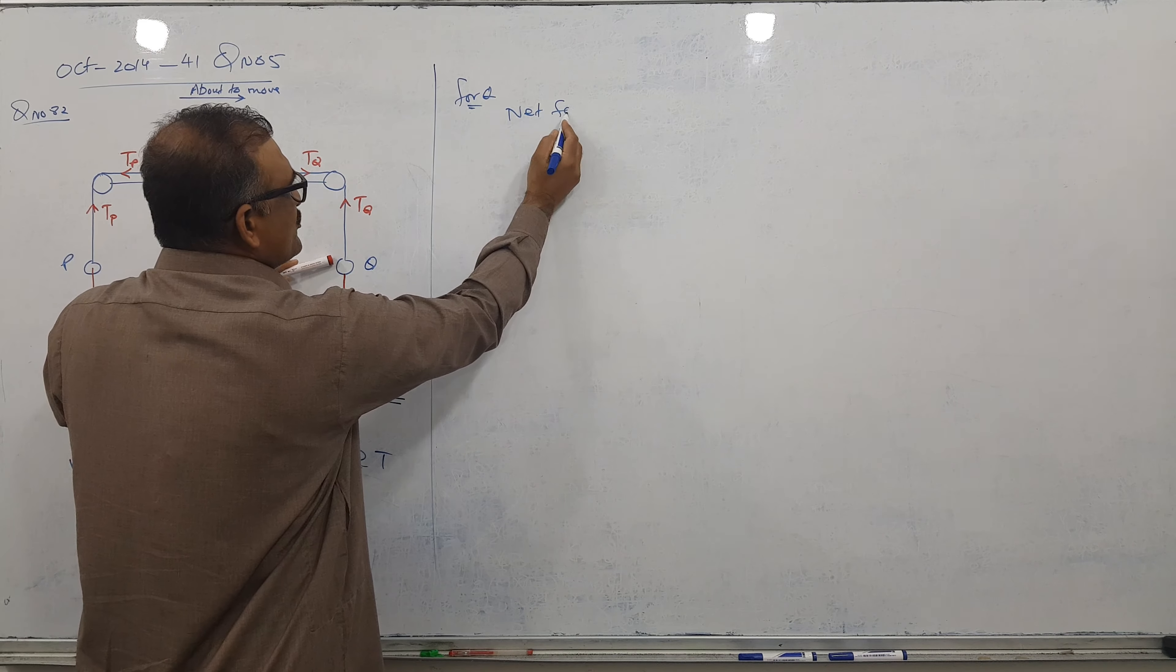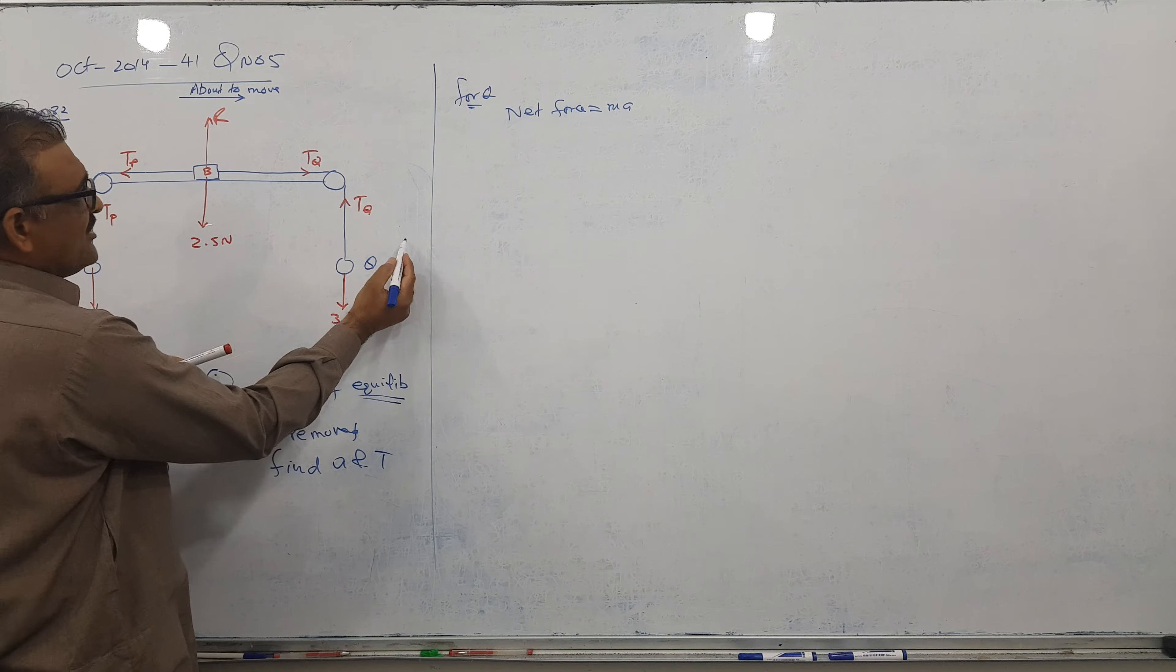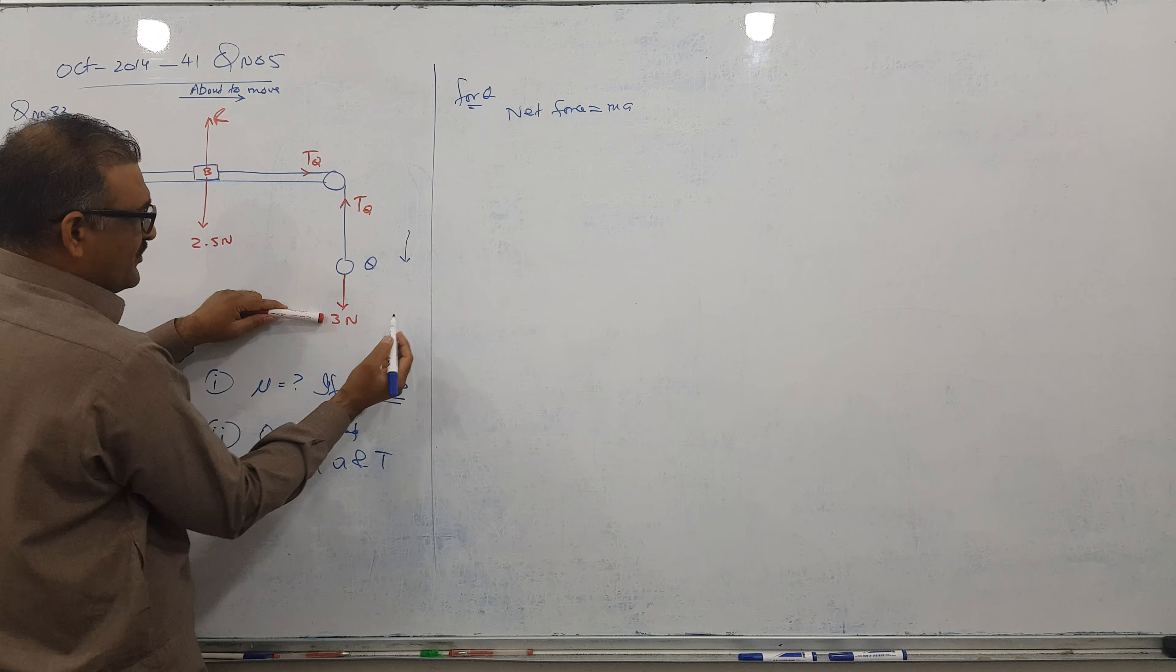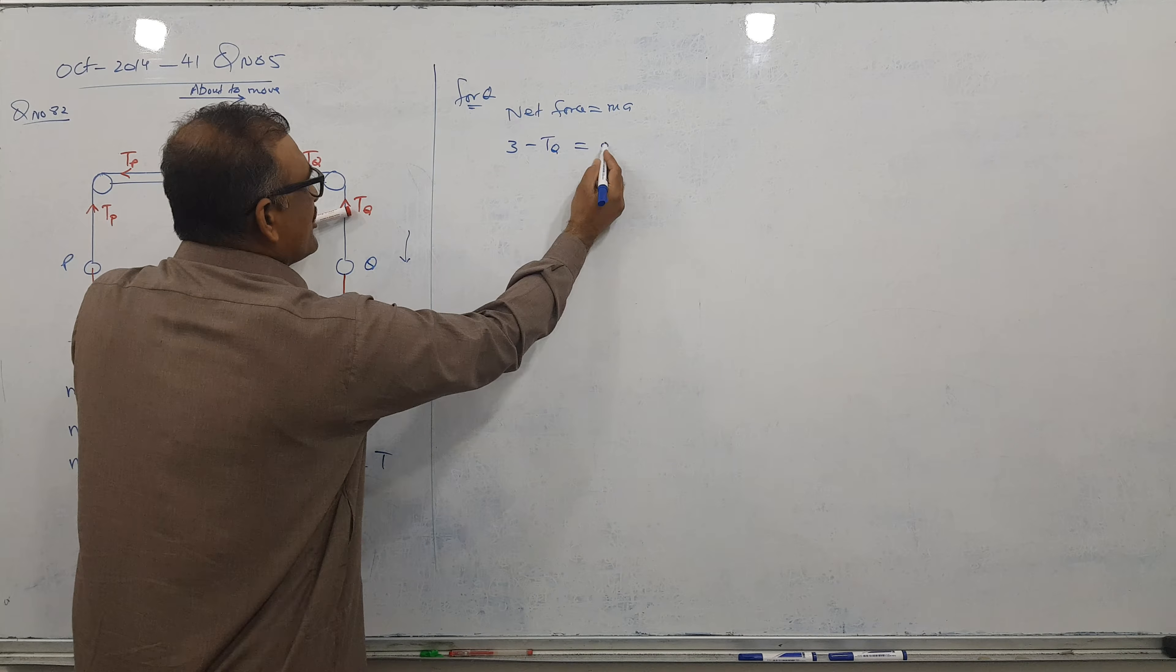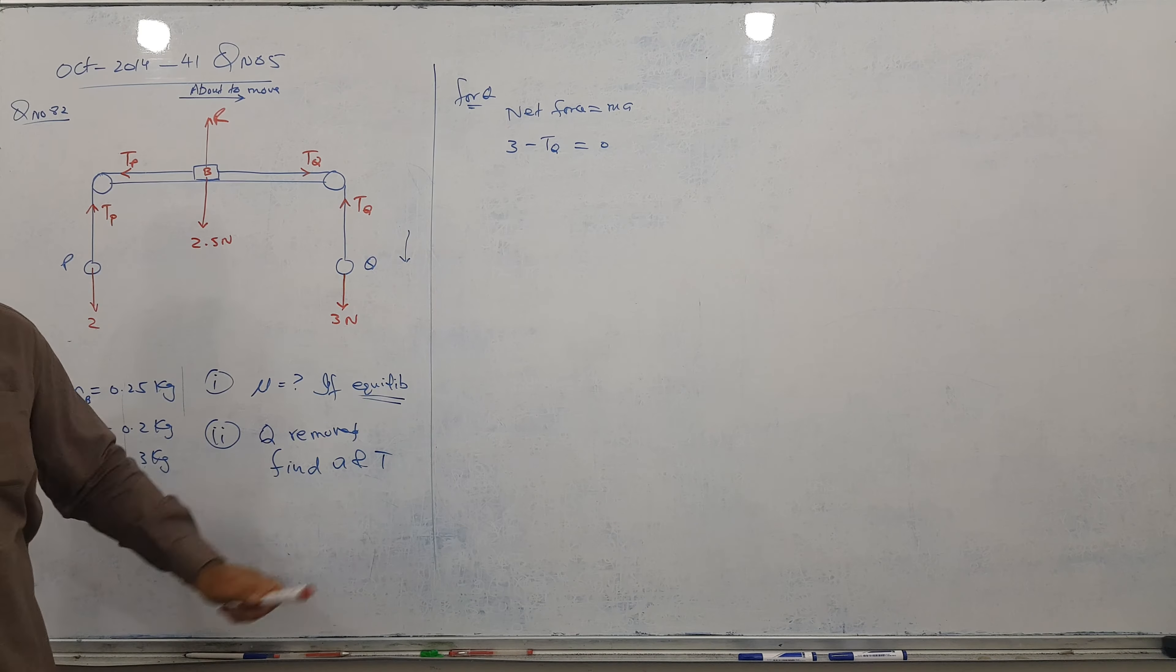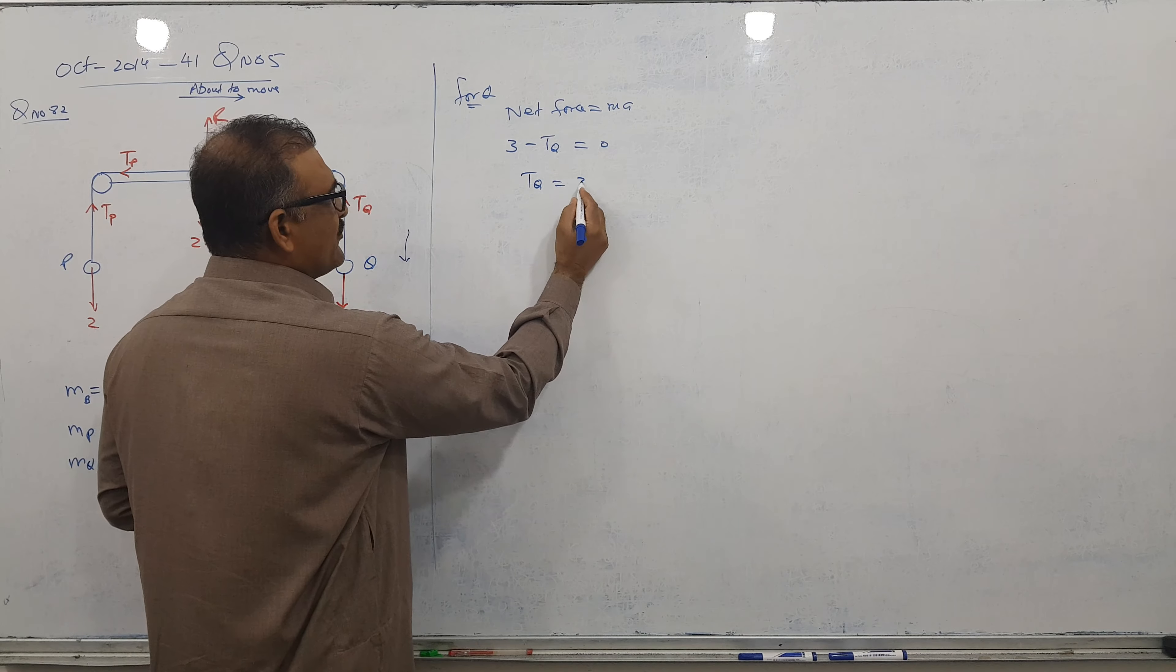All of you know net force equal to Ma. Because about to move this way, 3 minus tension Q equal to 0. Why 0? Because it is not moving, equilibrium. So acceleration 0. So tension Q gives us 3 Newtons.